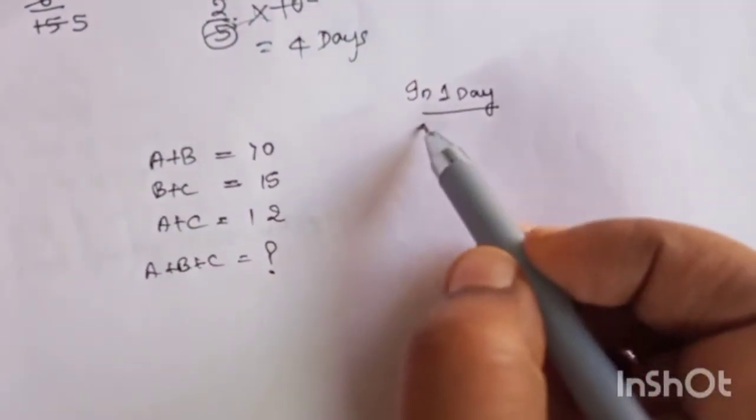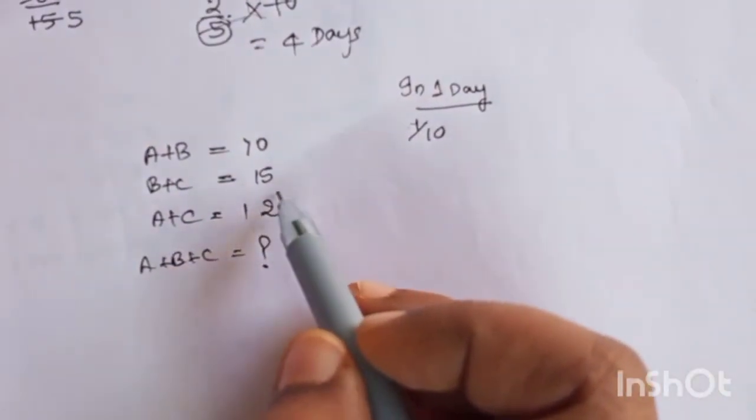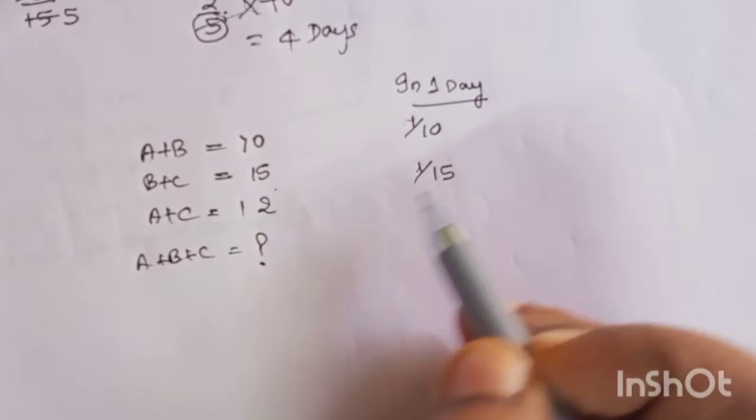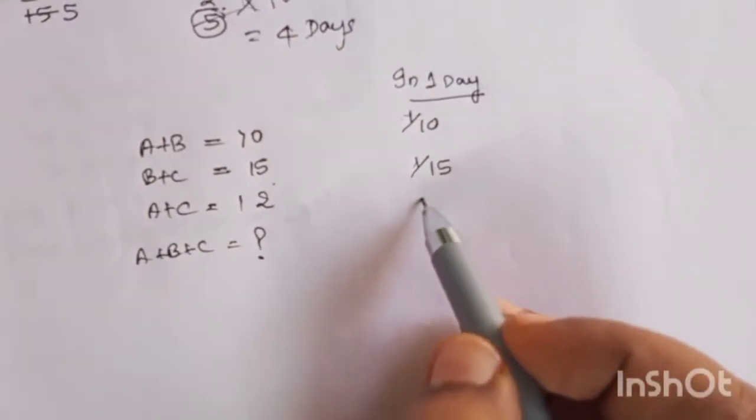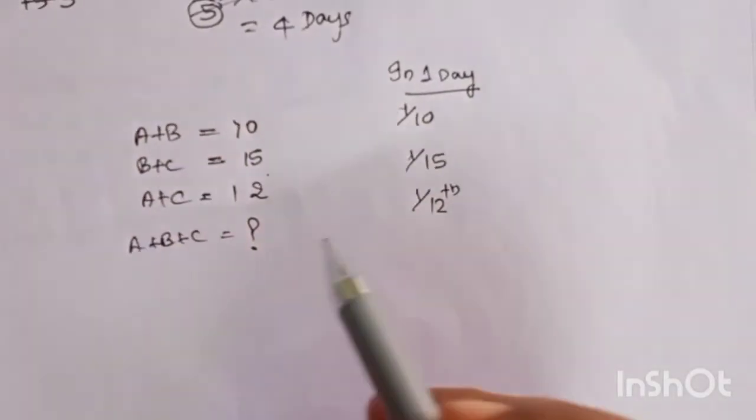If A plus B takes 10 days to do, so in one day they will do one tenth of the work. If B plus C is taking 15 days, in one day one by fifteenth of the work. If A plus C is taking 12 days, in one day one by twelfth of the work.